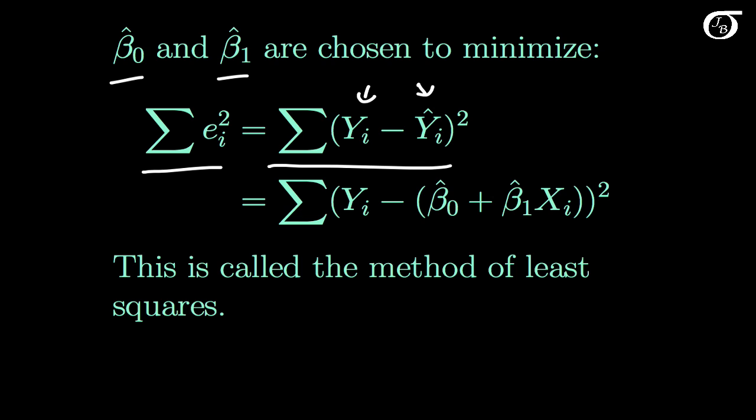To find the formulas for beta0 hat and beta1 hat, we would use calculus to find the values that minimize this function. I'm going to spare you the details here and move on to the actual formulas.